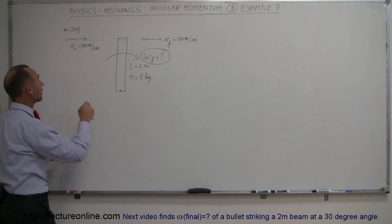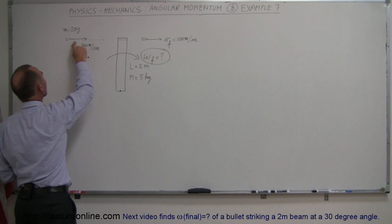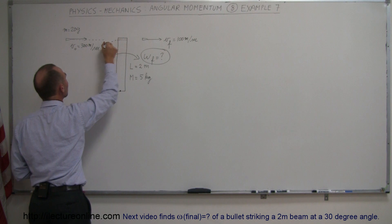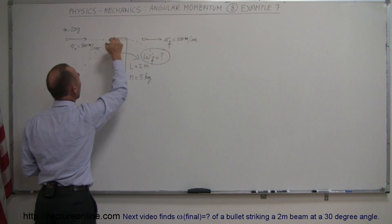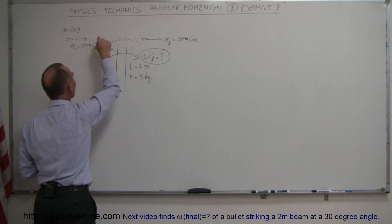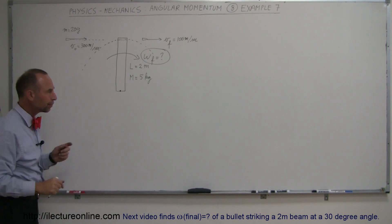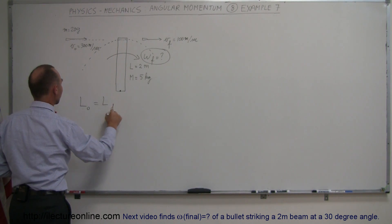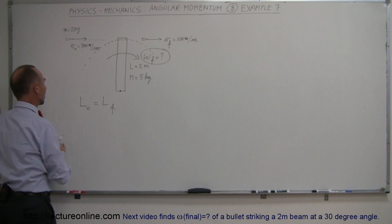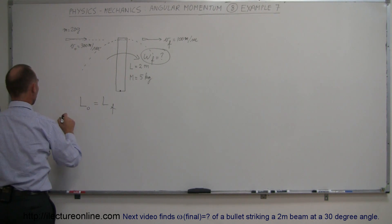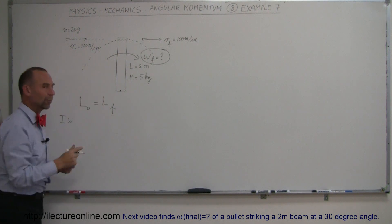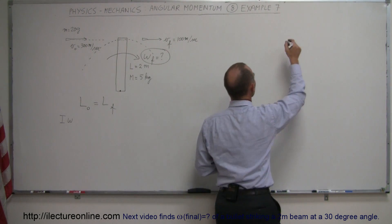We're going to assume that we can calculate the equivalent angular momentum of a bullet traveling in a straight line — as if the bullet was going in a circular path and moving at a tangential velocity equal to its linear velocity at that very moment in time. Let's find the equivalent angular velocity over here.